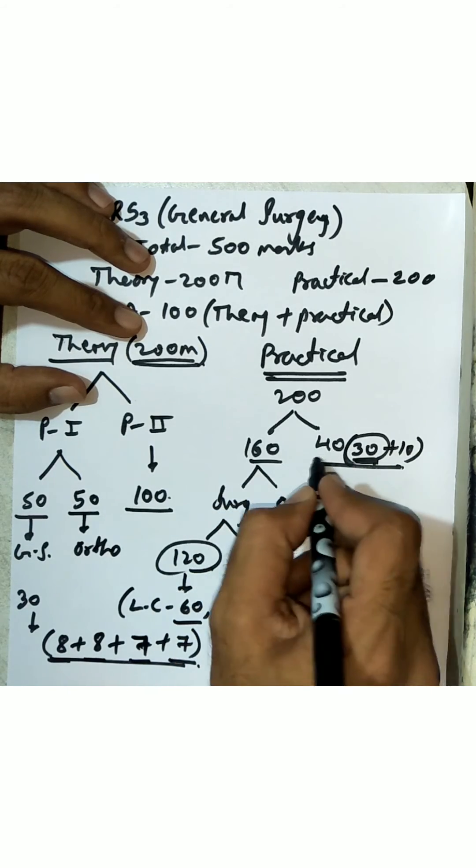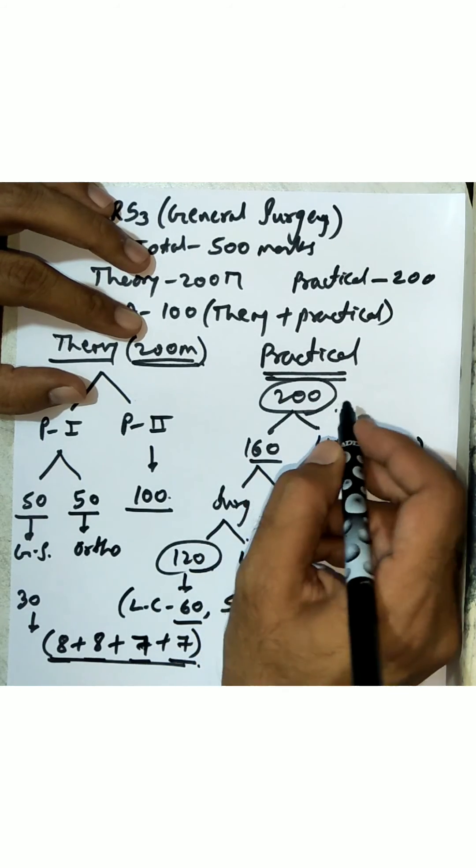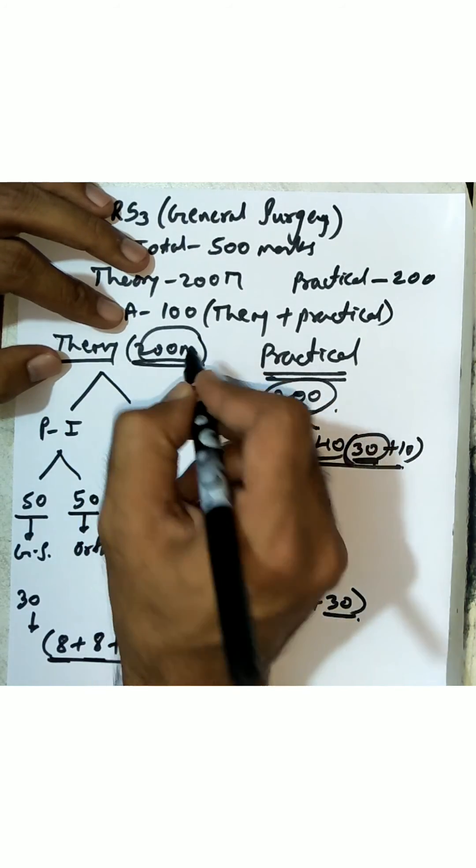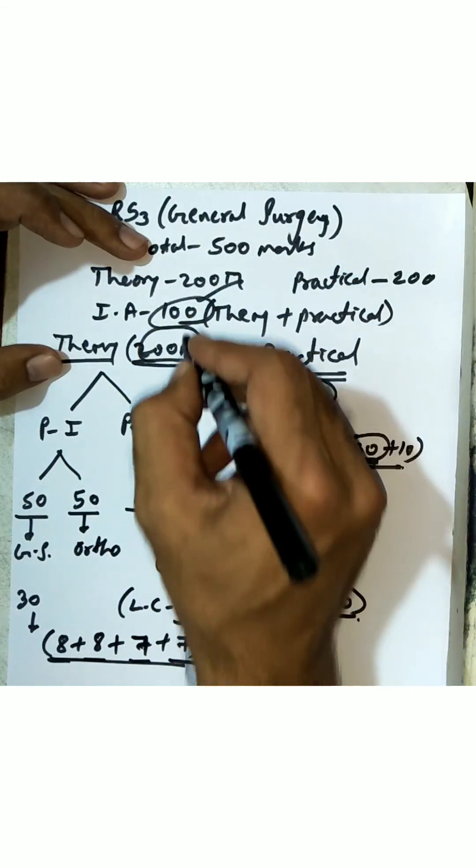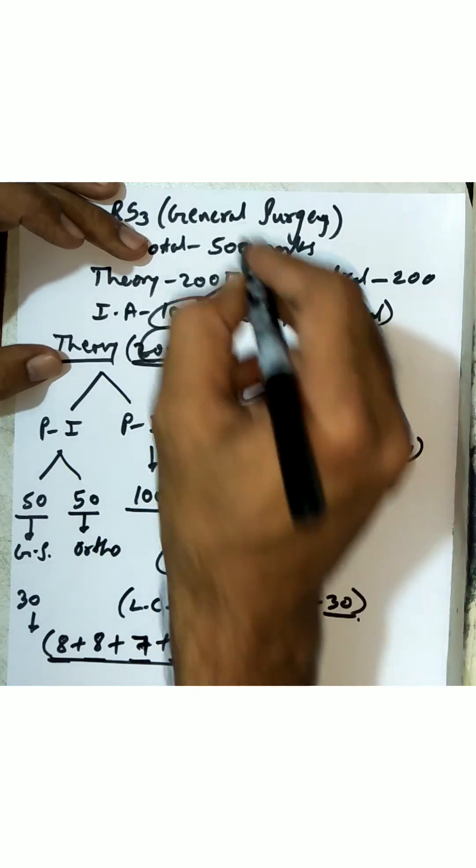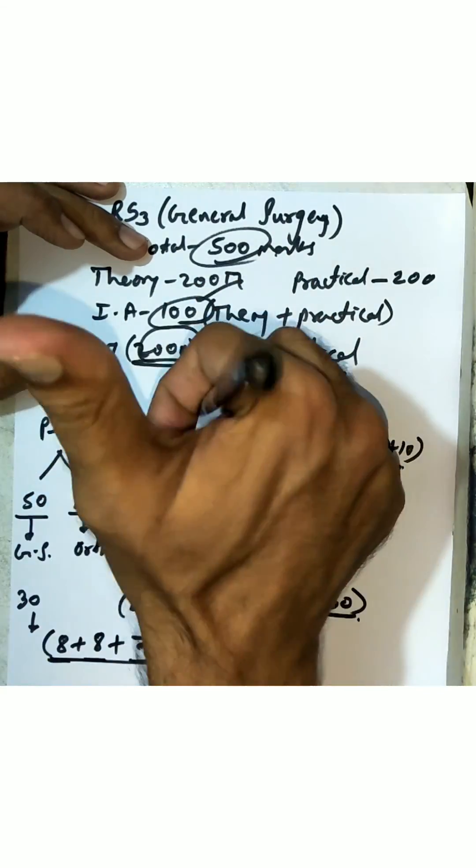So 160 plus 40 is 200 marks of practical exams and 200 marks for theory, constituting 400. With 100 marks for internal assessment, that's 500 marks total for general surgery.